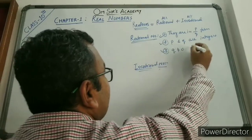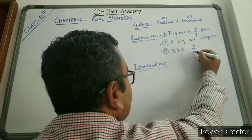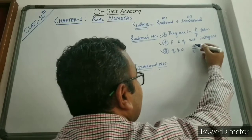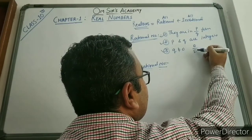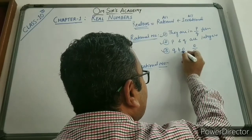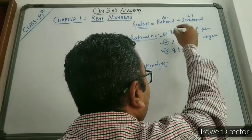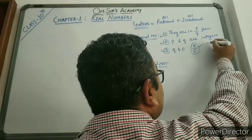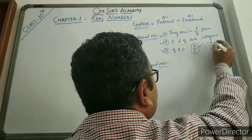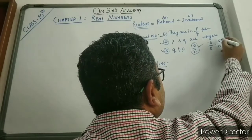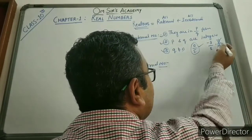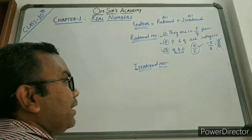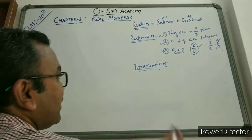For example, 0 upon 5 is a rational number because it is in P by Q form, both 0 and 5 are integers, and Q is not equal to 0 — all 3 conditions are satisfied. Minus 3 upon 8 is also a rational number. However, 8 upon 0 is not a rational number because the denominator Q is 0, so the third condition does not satisfy.